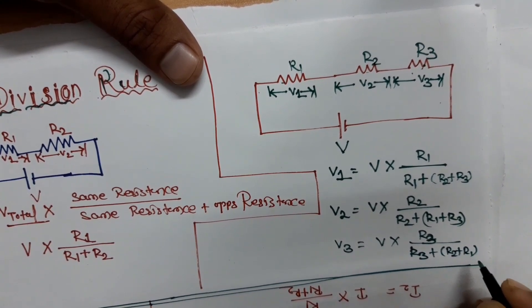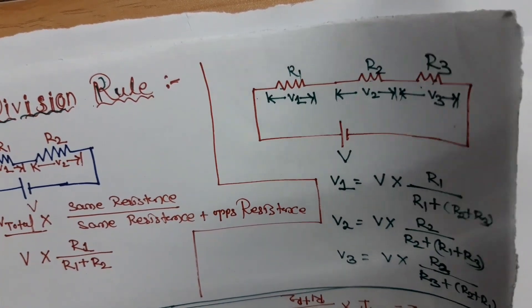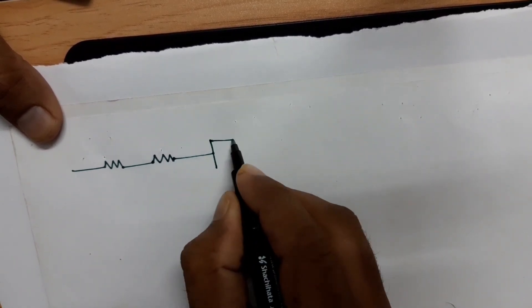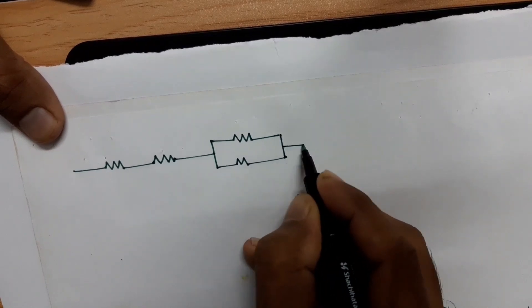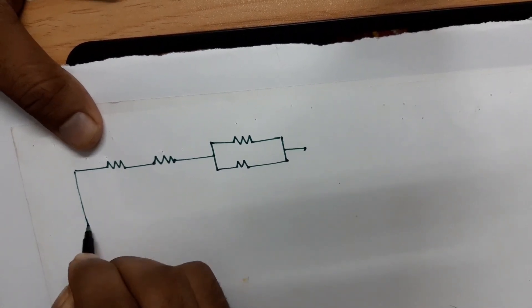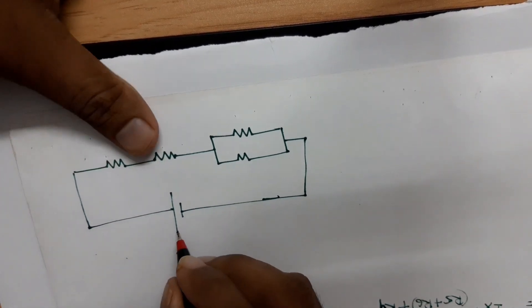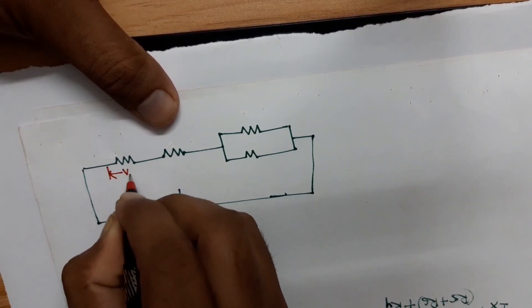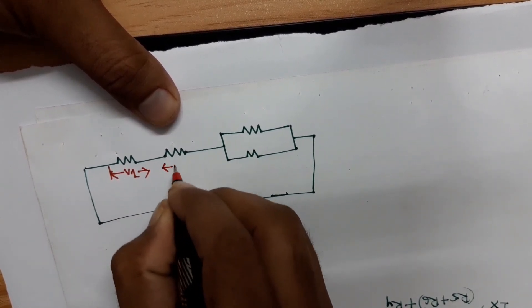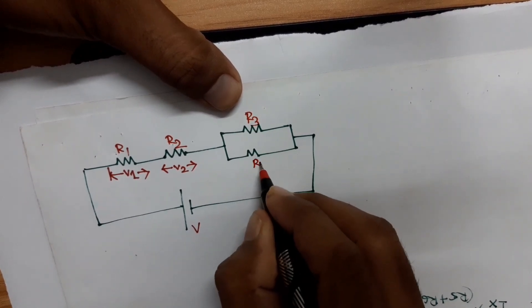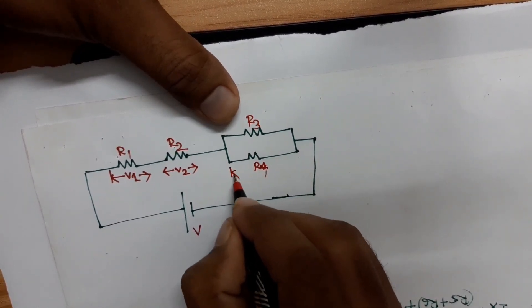Let's try with another level of circuit. The circuit looks like this: voltage source V, with voltage V1 across R1, V2 across R2, and then R3 and R4 are connected in parallel, so they share the same voltage V3.